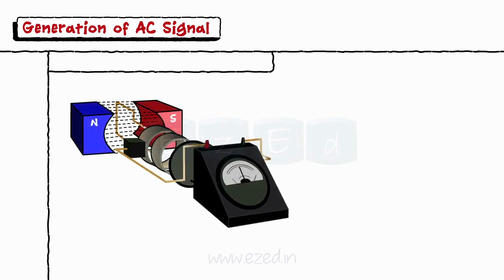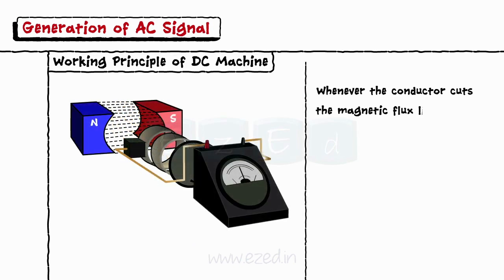A DC machine works on the principle that whenever the conductor cuts the magnetic flux lines, an EMF is induced in it which generates the sinusoidal current.